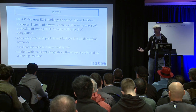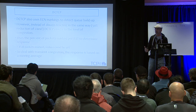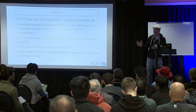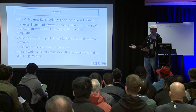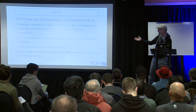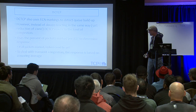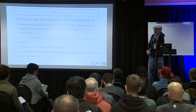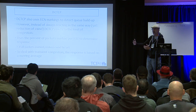DCTCP also uses ECN to detect congestion, but instead of always reacting the same way, it reacts proportionally to the level of congestion. It measures how many bytes or packets were marked per RTT and reacts proportionally. For example, if all packets were marked, it would reduce the congestion window by 50%. To deal with transient congestion, the response is based on a moving average, so if all packets are marked in one RTT, it would not react as aggressively as if all packets are marked for many RTTs.